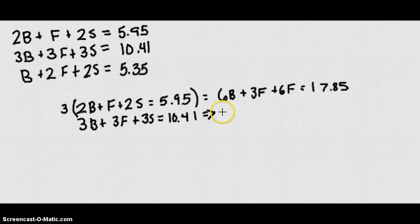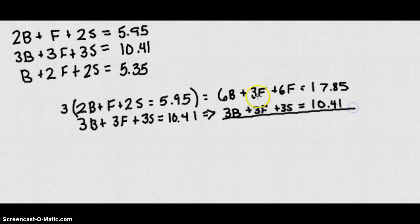Let's move this one underneath it. We get 3B plus 3F plus 3S equals 10.41. Let's subtract those and then that way we'll get rid of our F variable. We get 3B, those cross out, plus 6 minus 3 is 3S. Remember we're subtracting these equations to get rid of our F variable, and that's going to equal 7.44.